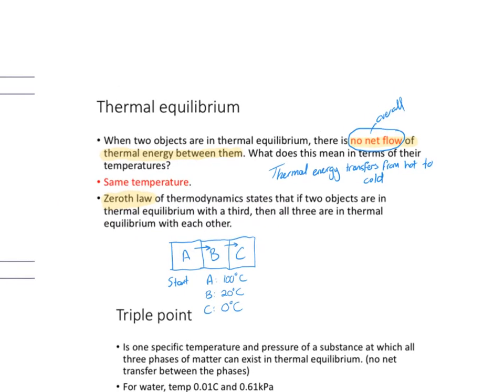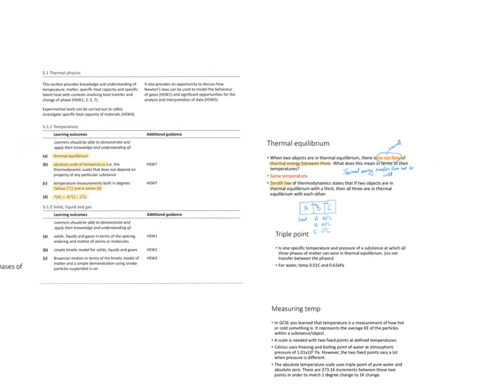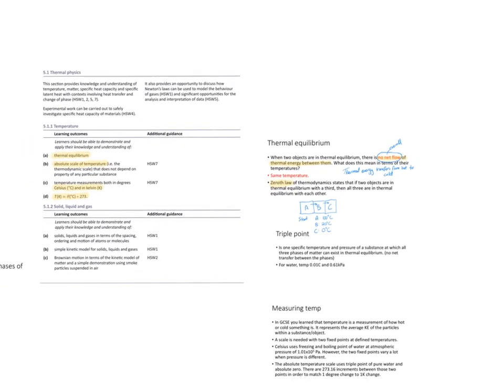Then we have the absolute scale of temperature, or what we call the thermodynamic scale of temperature. It does not depend on any property of any particular substance. So I'll go through that in detail.